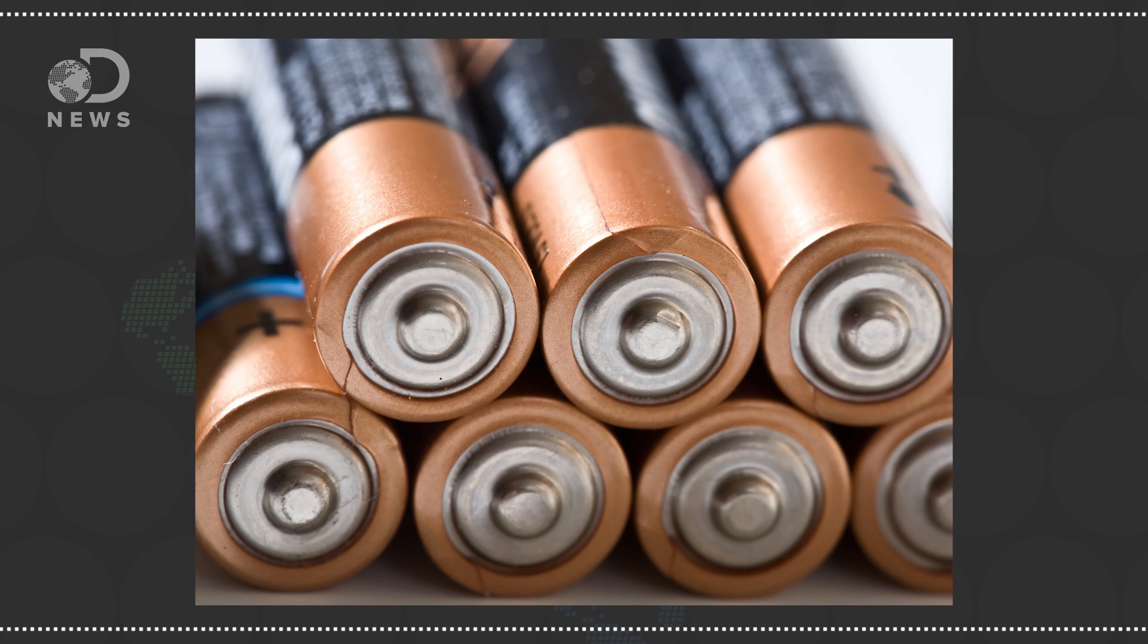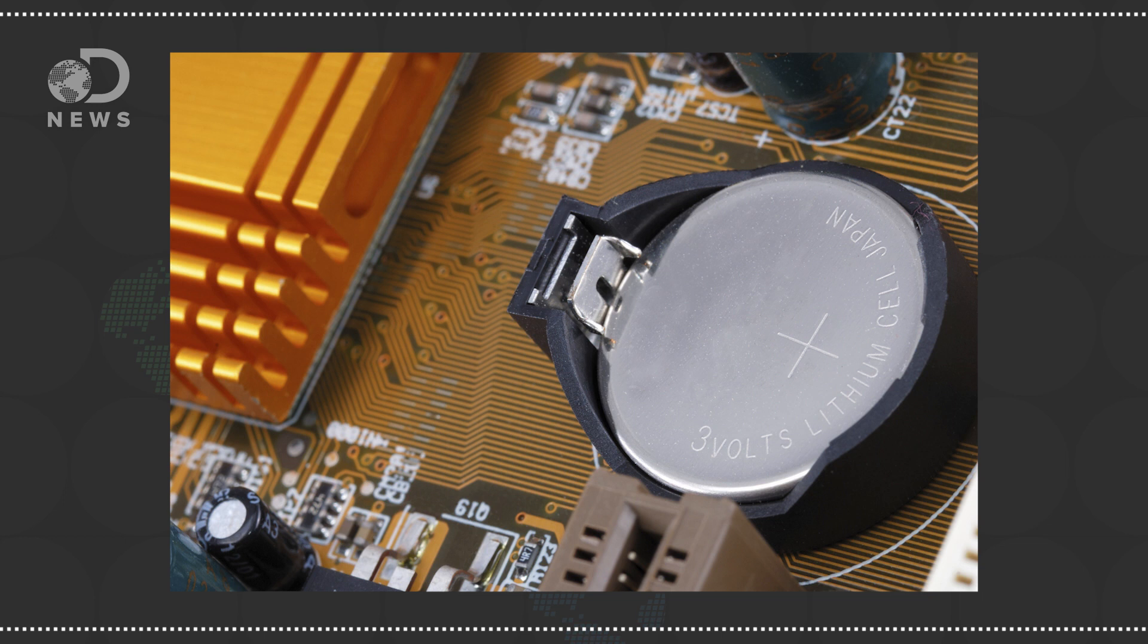The reason secondary cells can take the heat and recharge while primary cells can't has to do with the elements chosen in a bit of 200-year-old chemistry. Primary double-A batteries use cheaper materials like manganese and are great for low-draw devices like flashlights and smoke detectors.